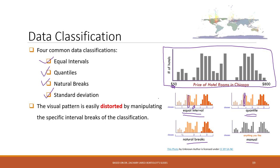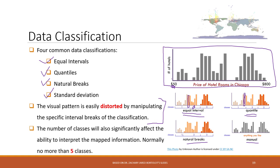Choosing the appropriate data classification is very important. The number of classes is also very important, because our human eyes and brain cannot distinguish too many classes. Normally we should not have more than five classes. If you have more than five, our brains tend to not be able to interpret the data correctly.